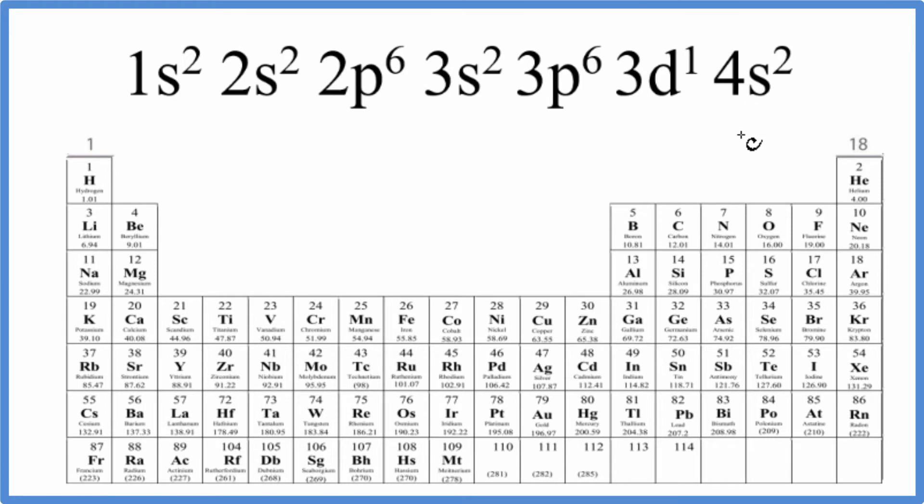The first and probably easiest way is to count up the number of electrons for this electron configuration. So we count all of these up and we get a total of 21 electrons.